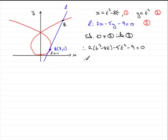So we just need to expand out the brackets now. So we get 2t cubed minus 16t. And then we've got minus 5t squared minus 9 equals 0. And what we can do is we've got ourselves a cubic equation here. And we ought to just rearrange this, put this in descending powers.